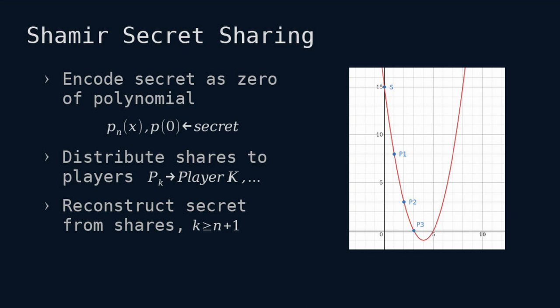The nice thing is that it depends on the degree of the polynomial what kind of reconstruction scheme you have. For example, if you have a parabola you need 3 points, and for the general case you always need n+1 points. You could even add P4 and P5, and then any 3 out of 5 of these shares could reconstruct the secret.